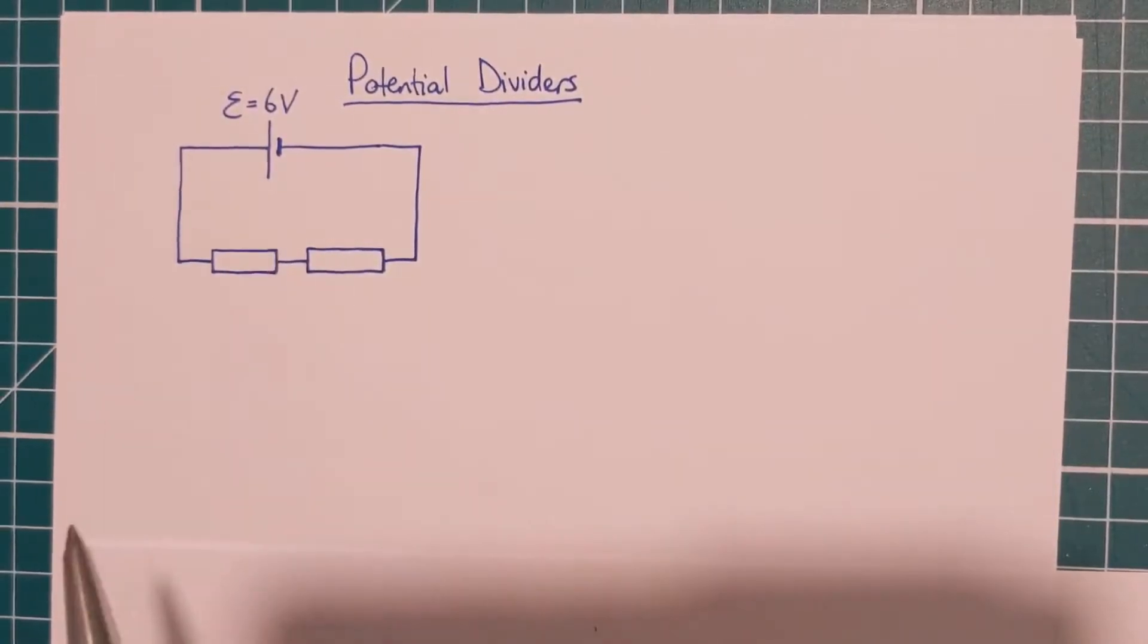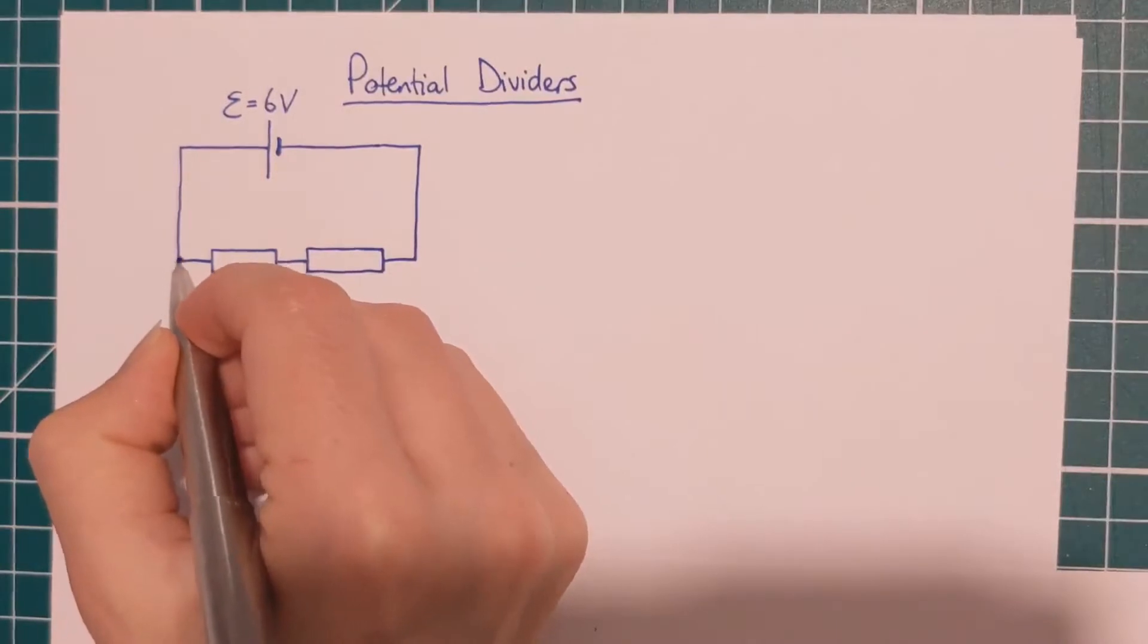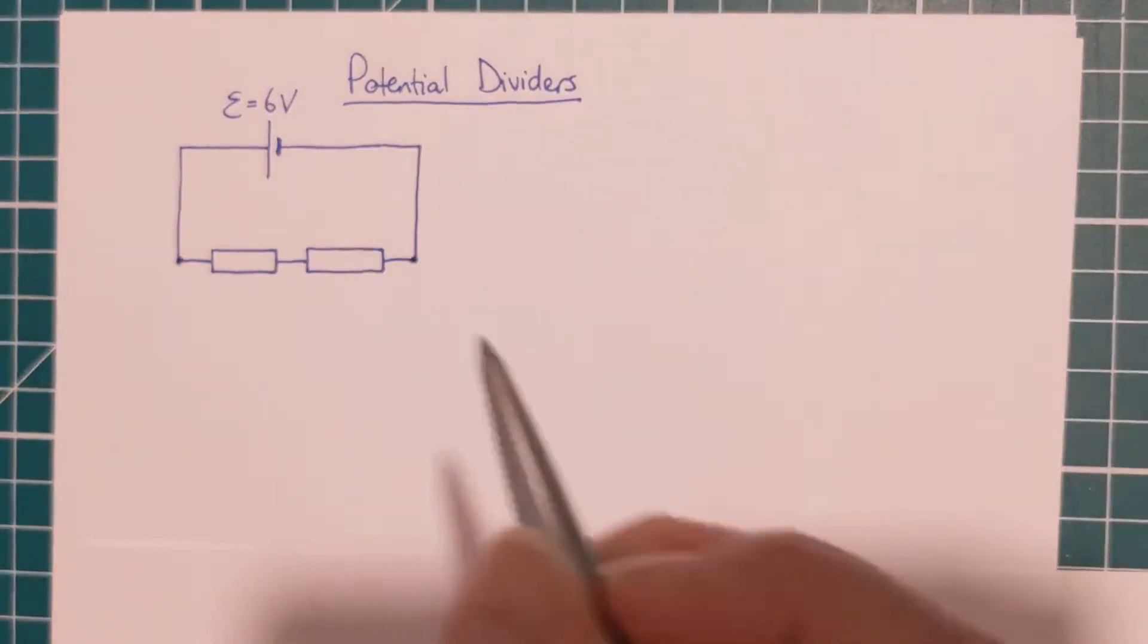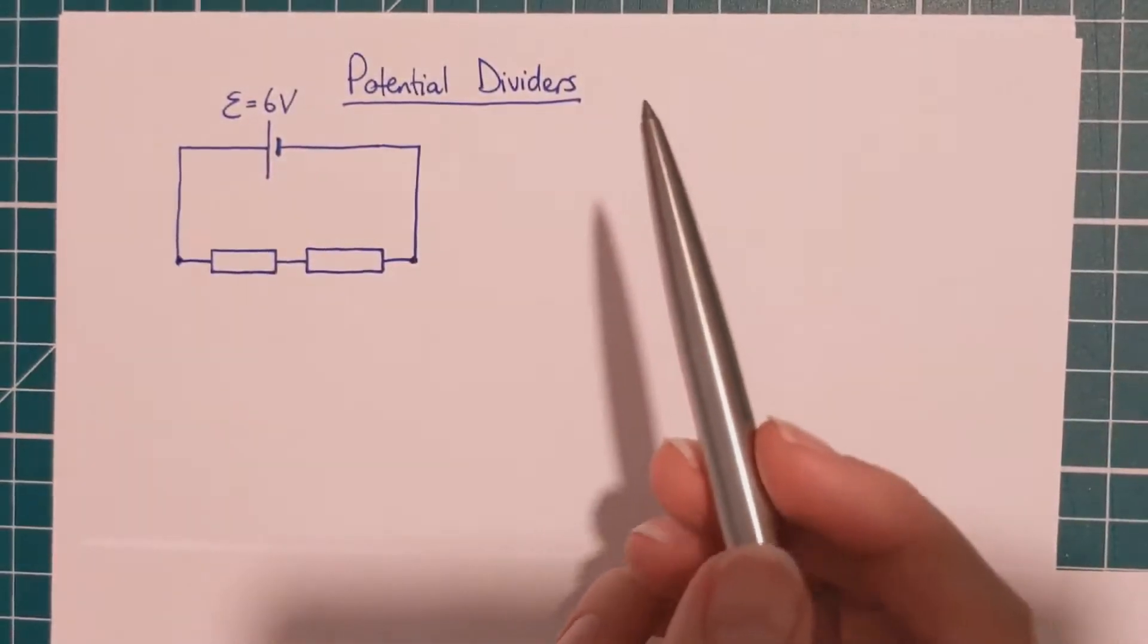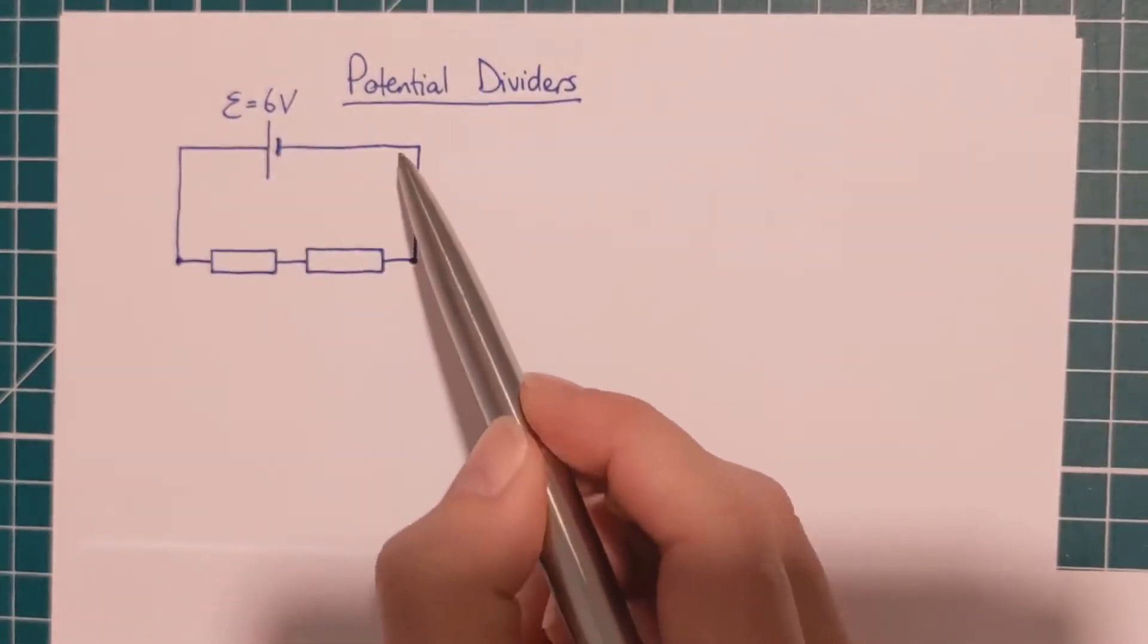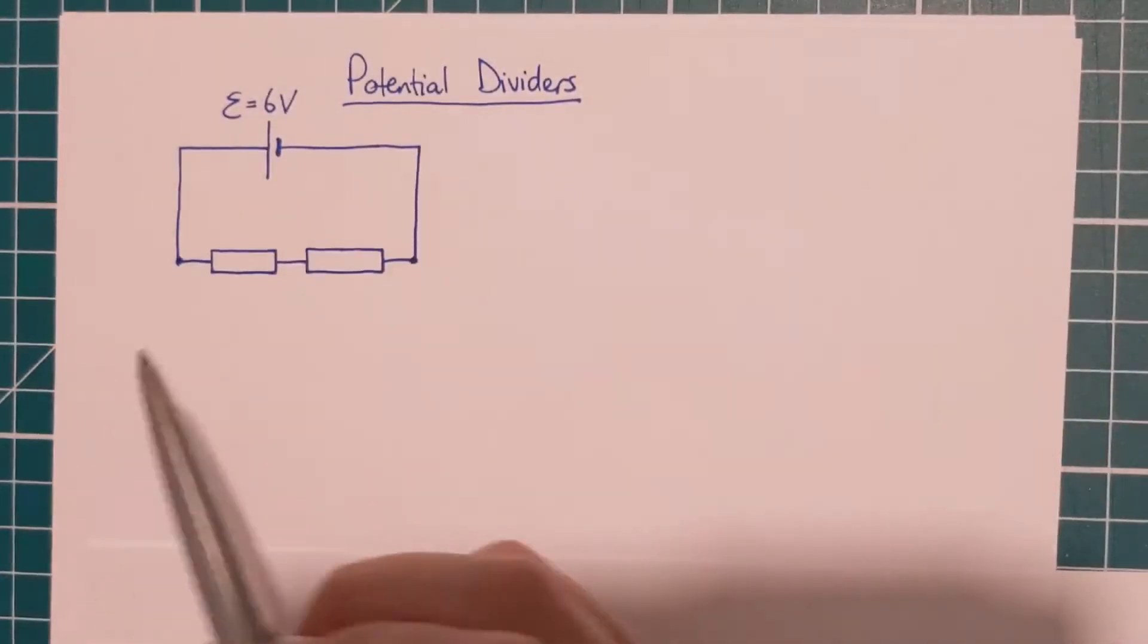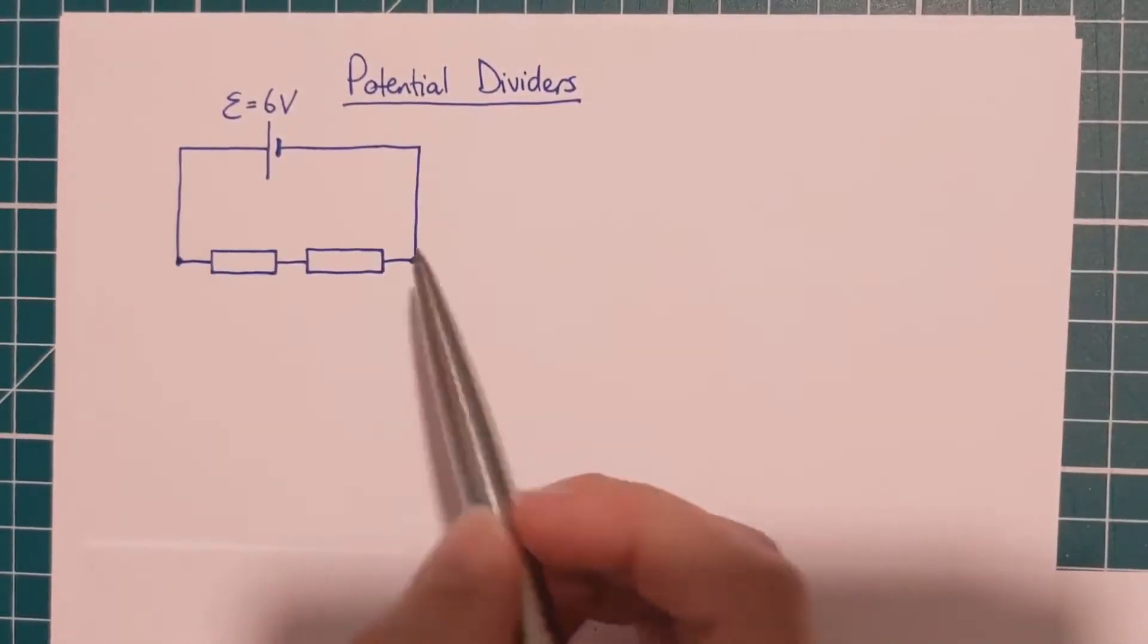If the EMF of our cell is six volts, then Kirchhoff's second law tells us that from here to here, the potential difference must be six volts as well because we have to have the total PD equal to the total EMF in our loop. So potential difference from here to here, six volts.